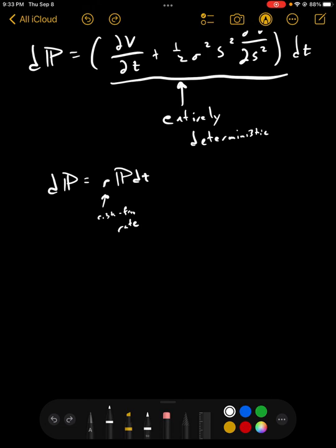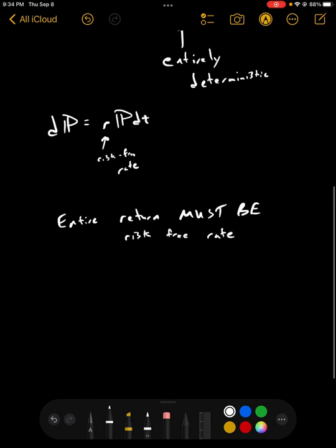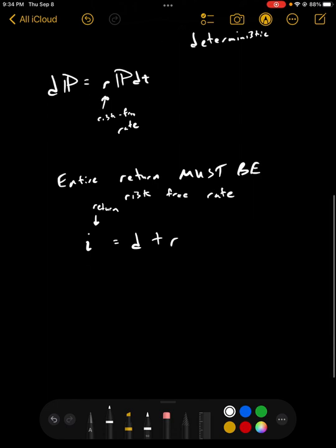But now, we have dividends, and the entire return must be the risk-free rate. So, if we take our returns and call it i, this is our return. We're getting d plus we're getting the risk-free rate. So, in order to have this return end up being the risk-free rate, we have to do i minus d, or, in this case, r minus d.